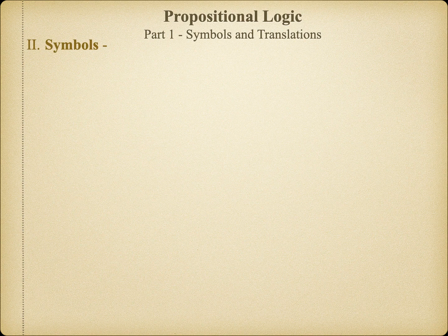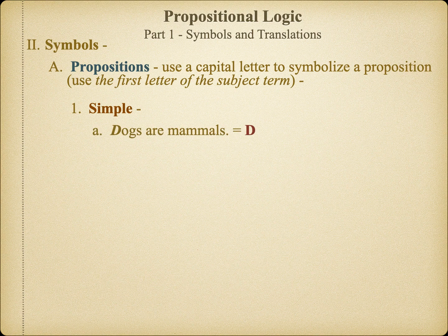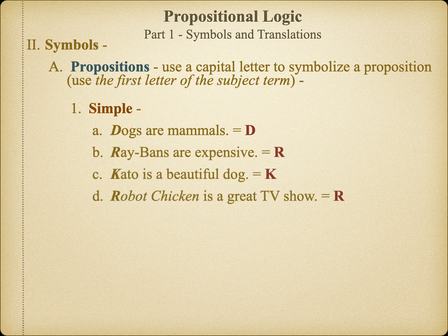Now that we can recognize the difference between simple and complex propositions, we're ready to begin the process of symbolizing the statements. The process is really very simple: look to the subject of the statement, take the first letter of the first word of the subject term, and use that capitalized letter to express the whole proposition. For example, if we have the statement 'Dogs are mammals,' the subject term is 'dogs,' which begins with the letter D. So we use this letter to represent the whole statement. Now we've eliminated all of the words, grammar, and syntax of each statement, and we can think of each as a simple proposition represented by a single variable.